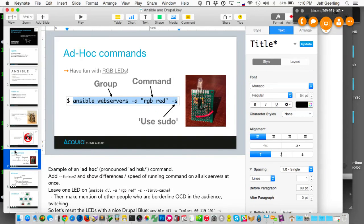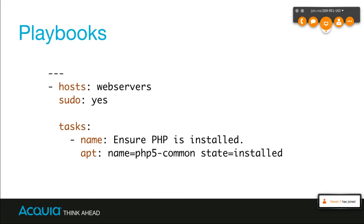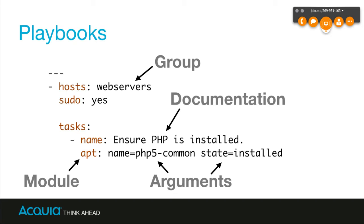Let's get back to playbooks, which is where a lot of the work happens. A playbook takes commands or a shell script and turns it into immutable infrastructure — you can run it once or 100 times and it'll ensure a certain state is matched. Here's a playbook: it uses YAML, just like Drupal 8 uses YAML. You give it a list of tasks — in this example, just one that makes sure PHP is installed. You pass it a module name — in this case APT for Ubuntu, YUM for CentOS — and give it a package name and state.